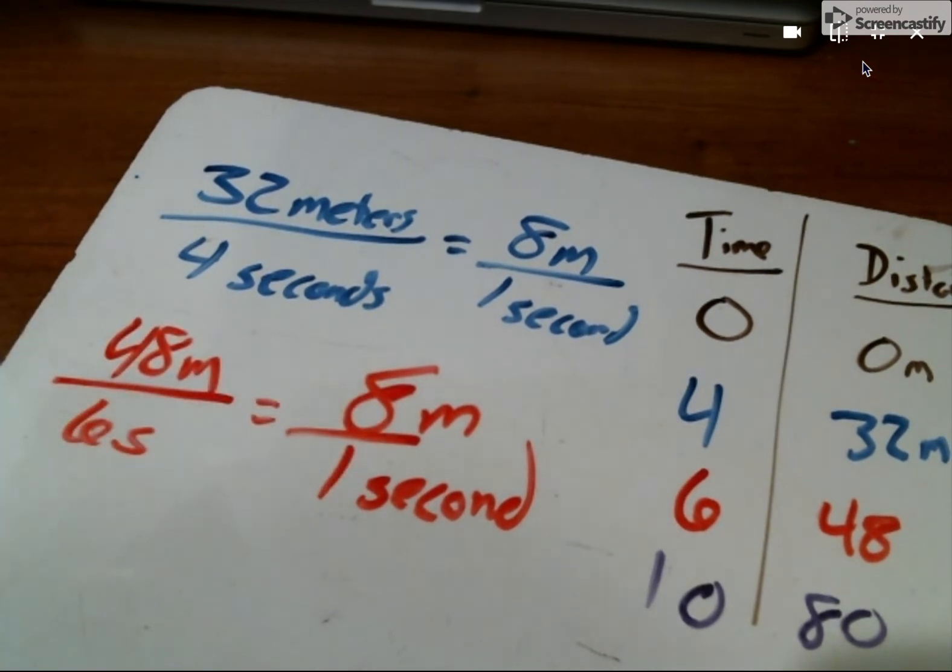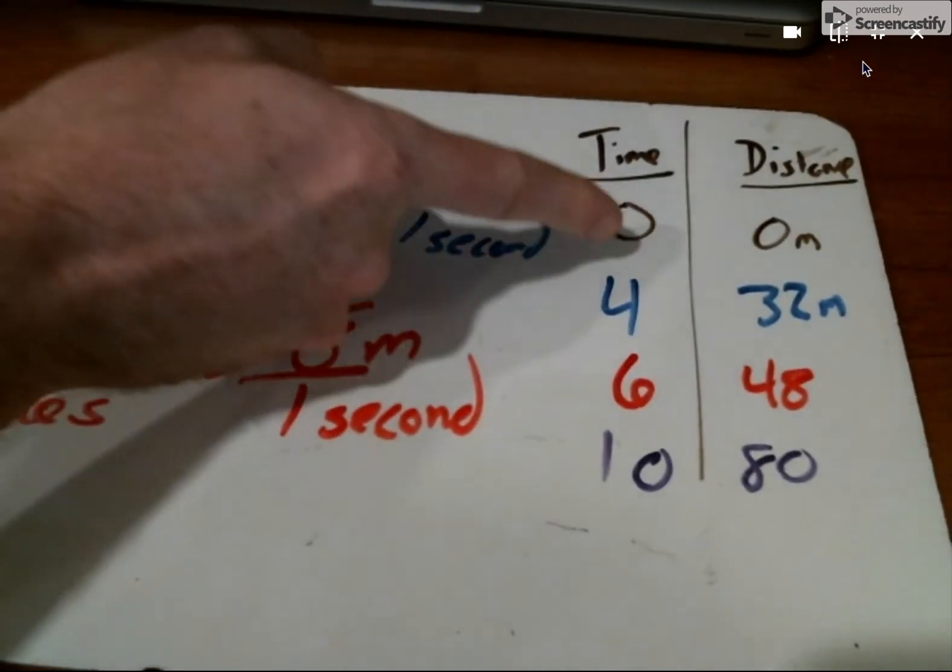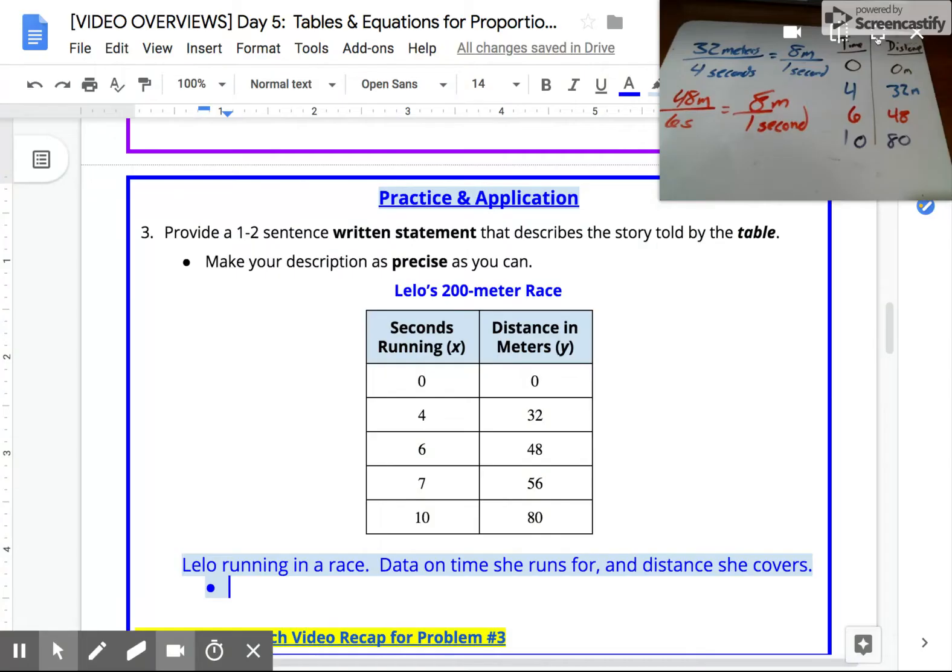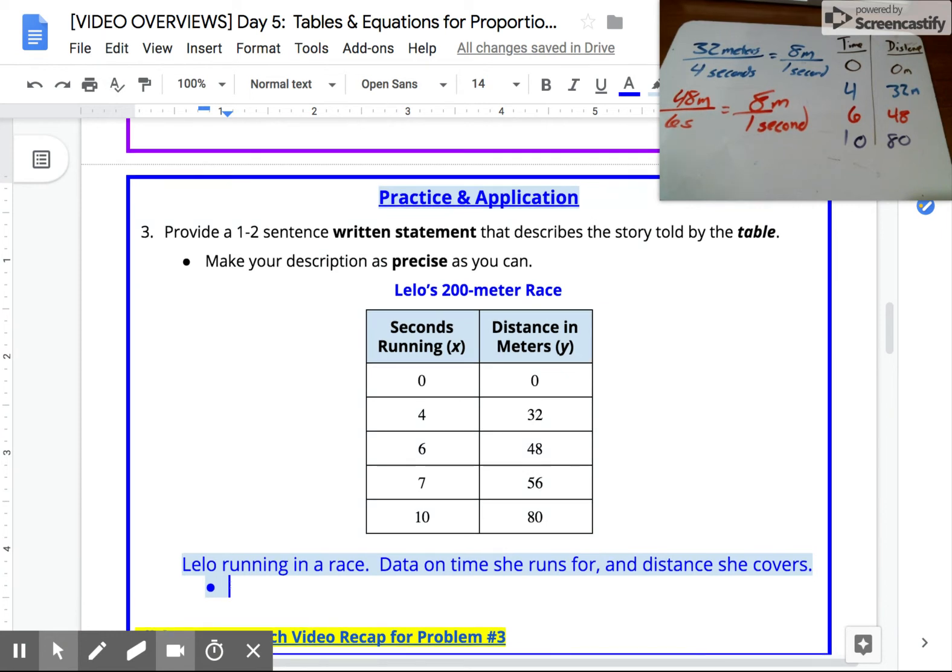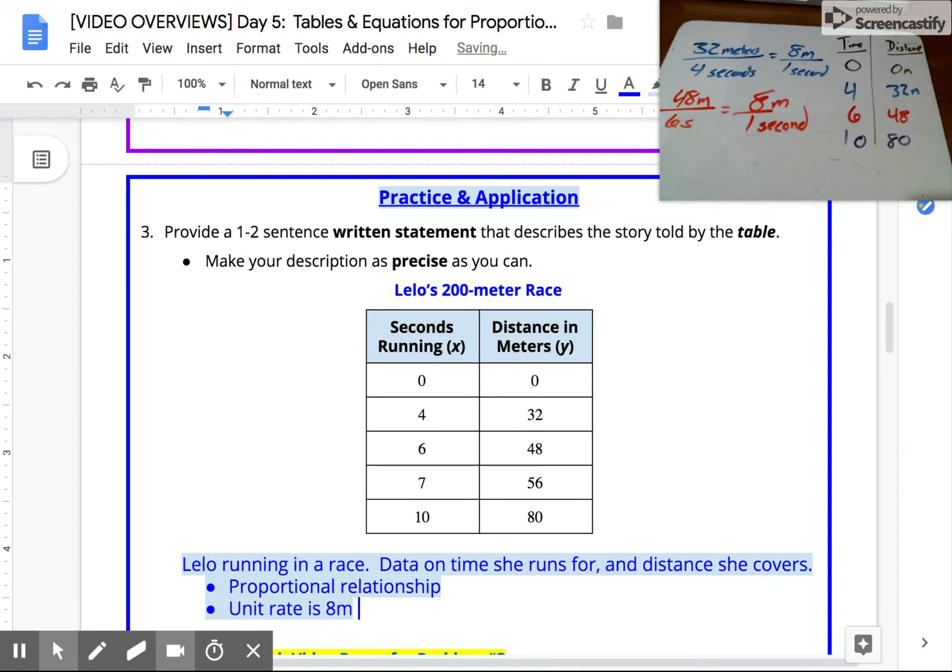This is telling us a few things. First, hopefully we're recognizing this is a proportional relationship. So one thing we could be saying is there's a proportional relationship there. We'd want to get specific for sure and say the unit rate is eight meters per second.